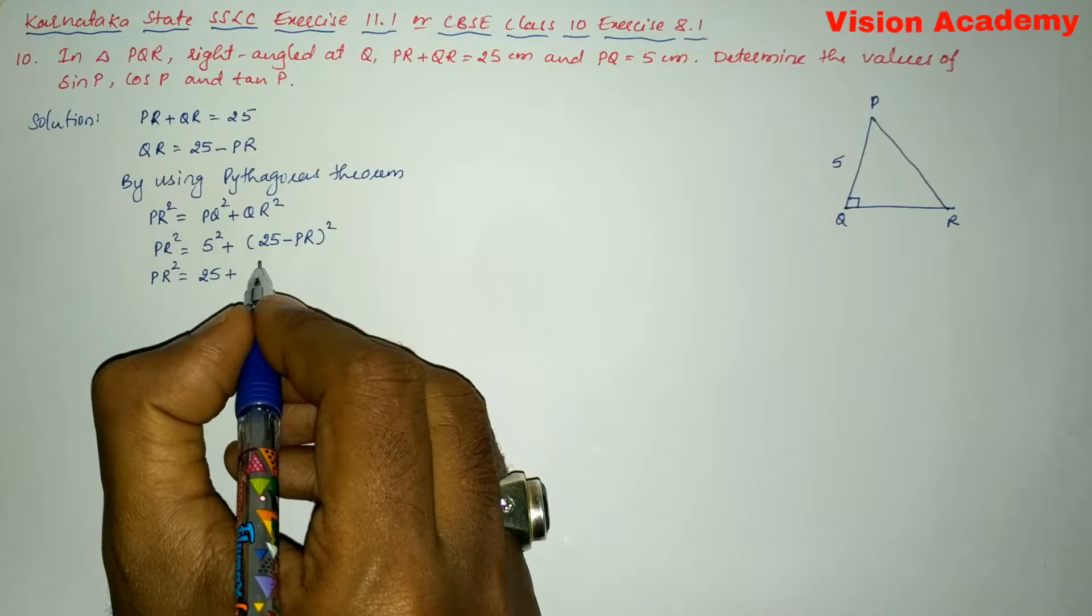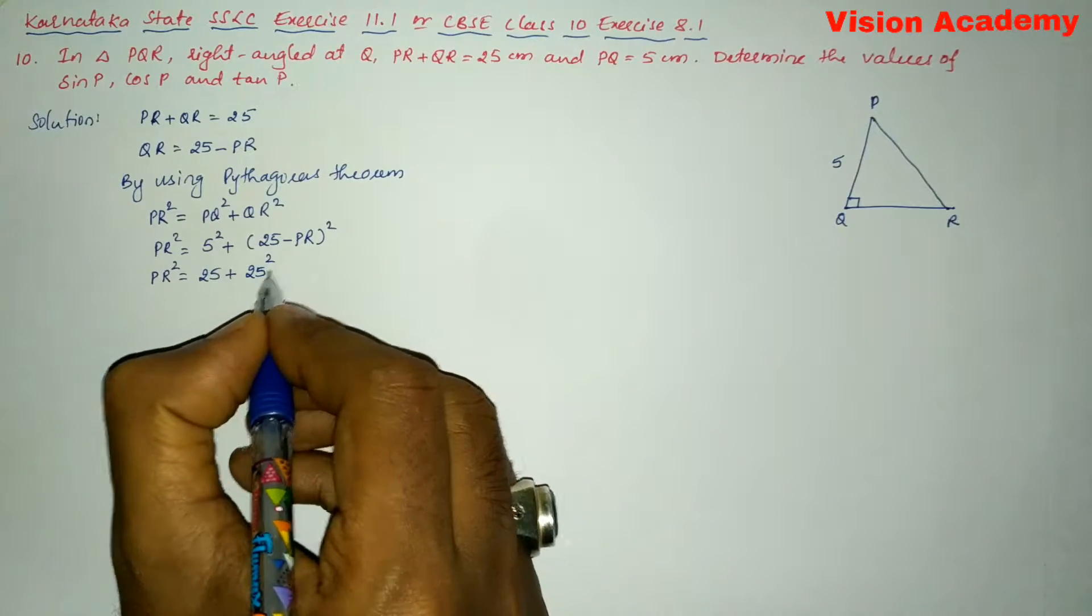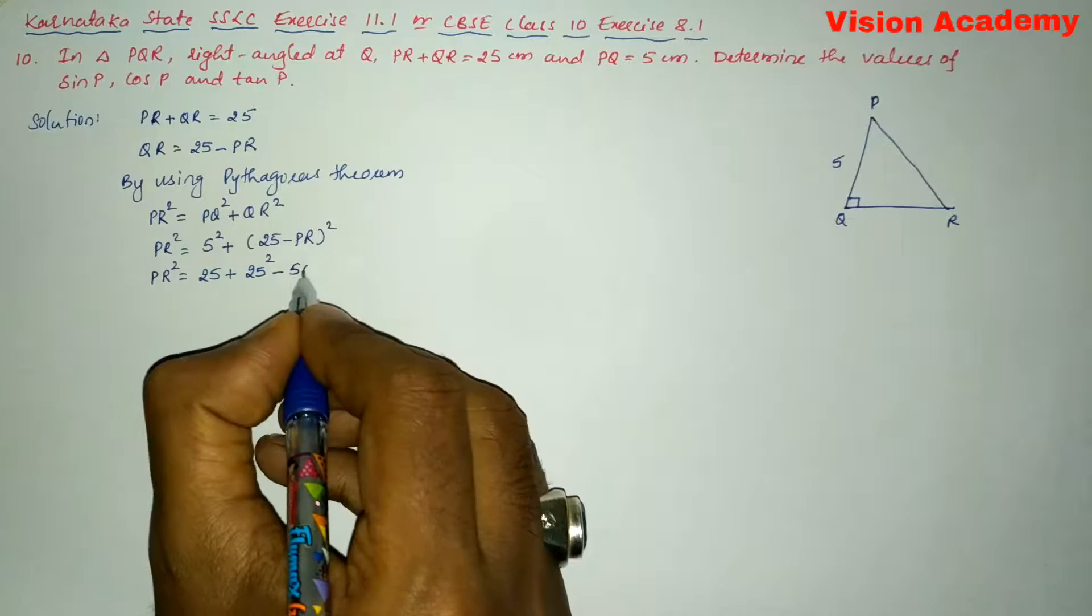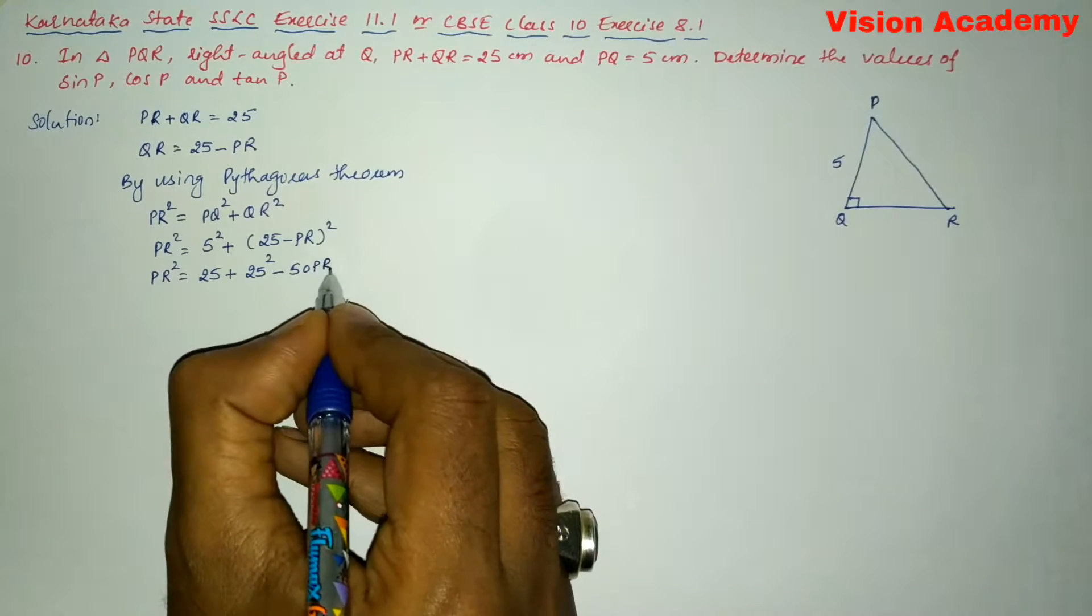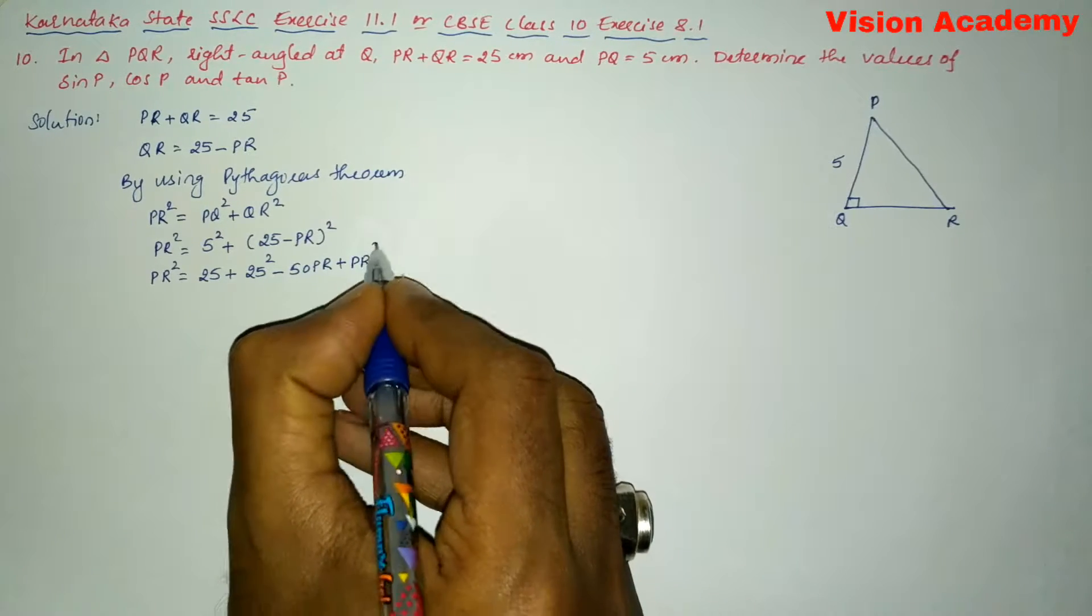So here we will write this one as 25 square that is A square minus 2AB, 2 times 25 is 50 into PR. Next plus B square is PR square.